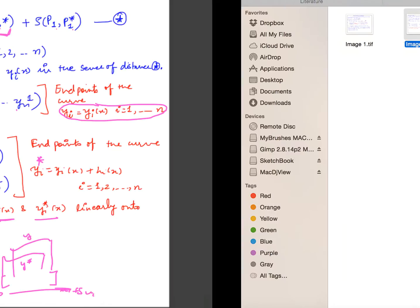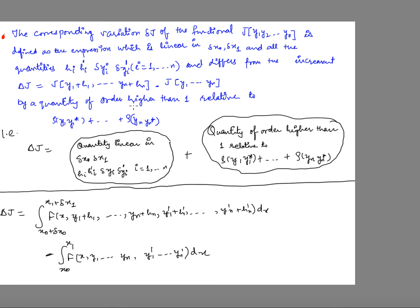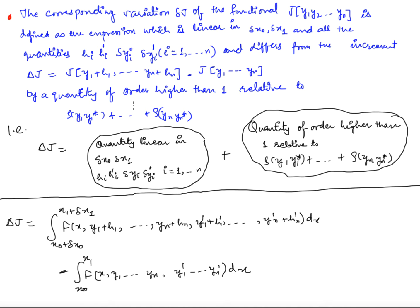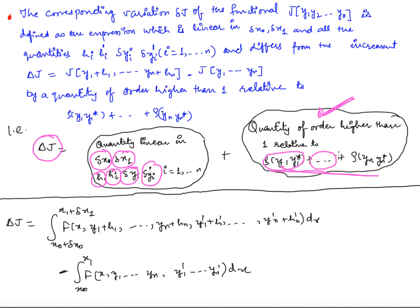Similarly as done in the last video — if you haven't seen it, you should see that first. Now we compute delta J and separate it into two quantities: the quantity linear in the parameters delta_x0, delta_x1, h_i, h_i_dash, delta_y_i, delta_y_i_dash, and the quantity of order higher than 1 relative to this distance. We have n functions specifying one curve in R^(n+1), and we take the sum of distances between those functions.